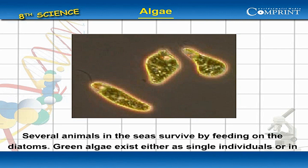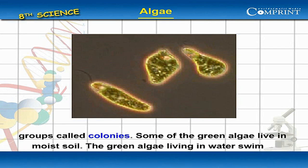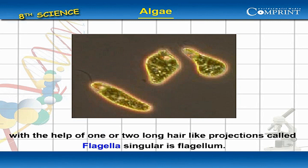Green algae exist either as single individuals or in groups called colonies. Some of the green algae live in moist soil. The green algae living in water swim with the help of one or two long hair-like projections called flagella — singular, flagellum.